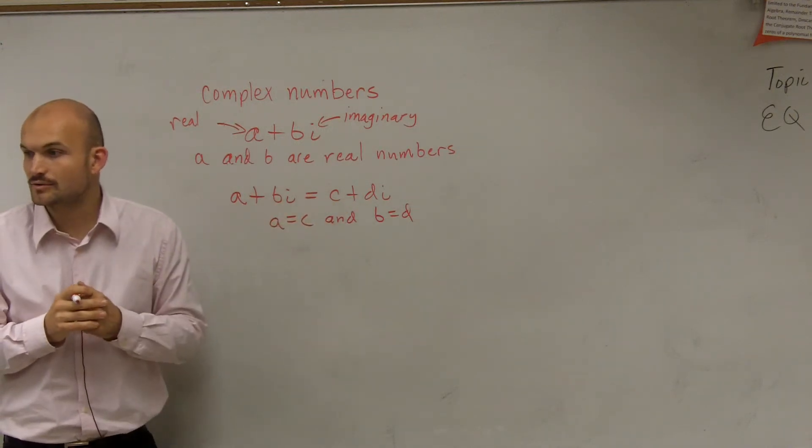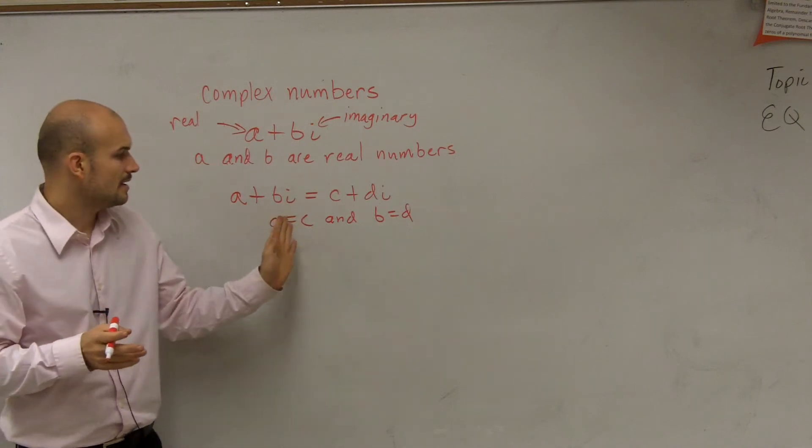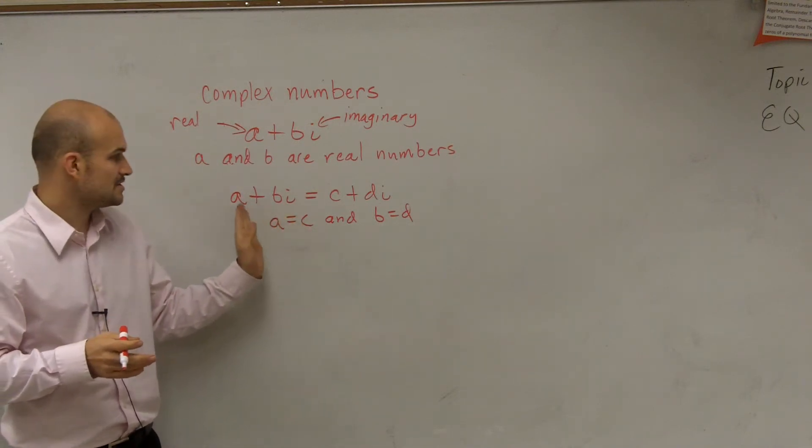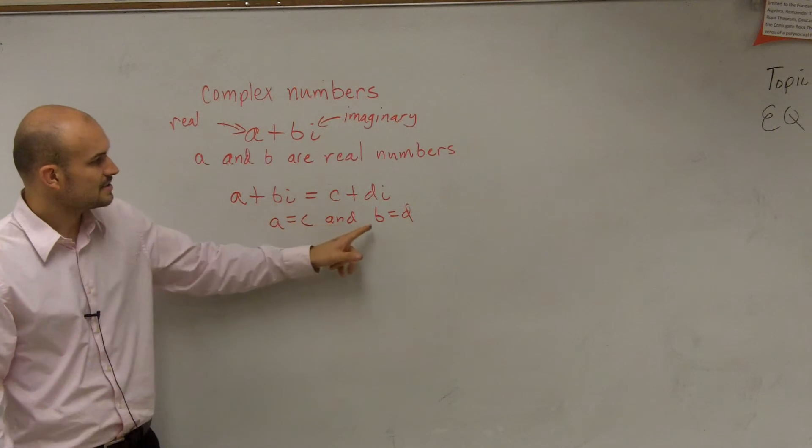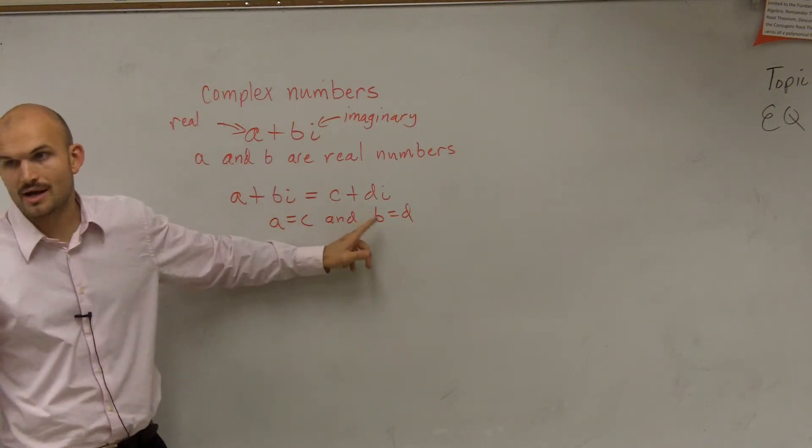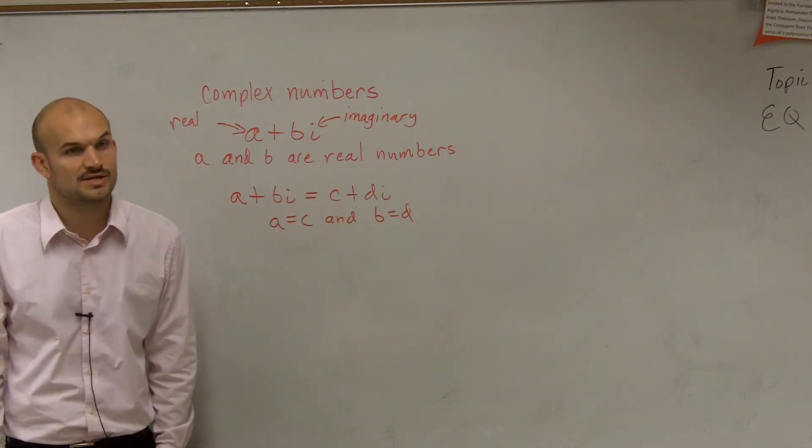If two complex numbers are equal to each other, a has to equal c, that means your real has to equal your real, and your coefficient of your imaginary part has to equal the coefficient of the other imaginary part.